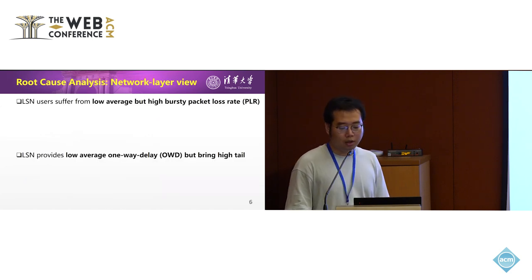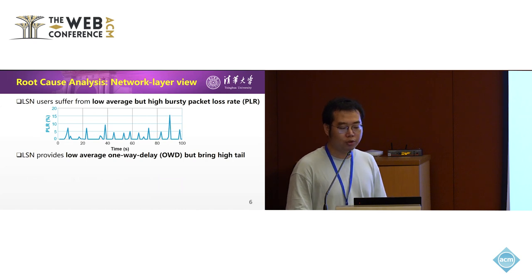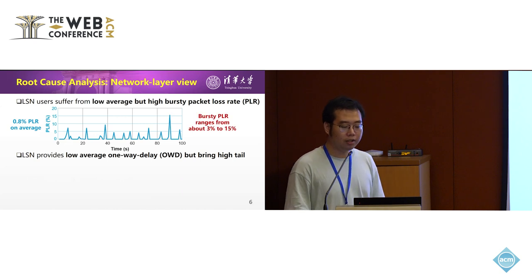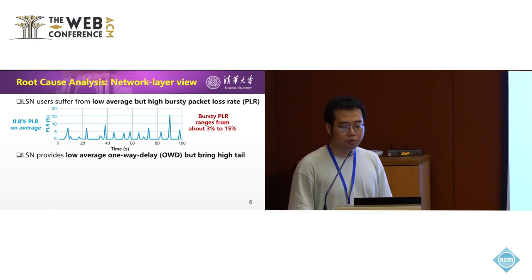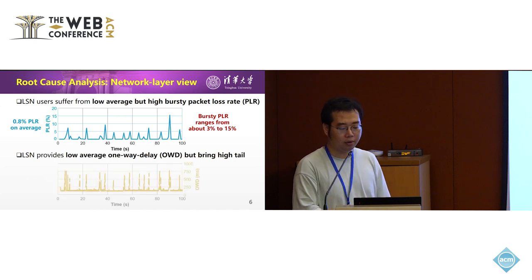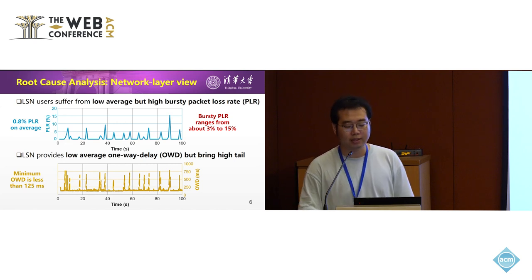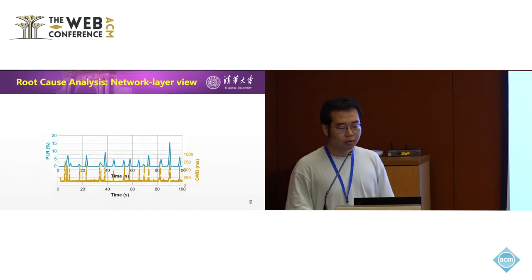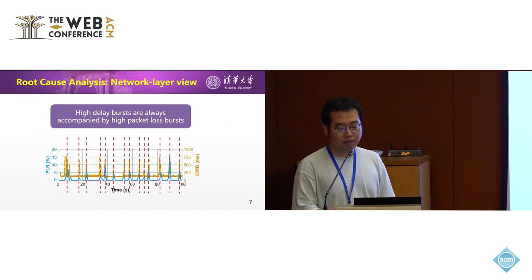Next, we analyzed the root cause of the above problems through further measurement. We found that LSN users suffer from low average but high bursty packet loss rate. Specifically, the average packet loss rate is only 0.8%, but the bursty packet loss rate may range from 3% to 15%. We also found that LSN provides low average one-way delay but brings high tail delay. Specifically, the minimum one-way delay is less than 125 milliseconds, but the maximum one-way delay can exceed 750 milliseconds. Surprisingly, if we align their times, we find that high delay bursts are always accompanied by high packet loss bursts.